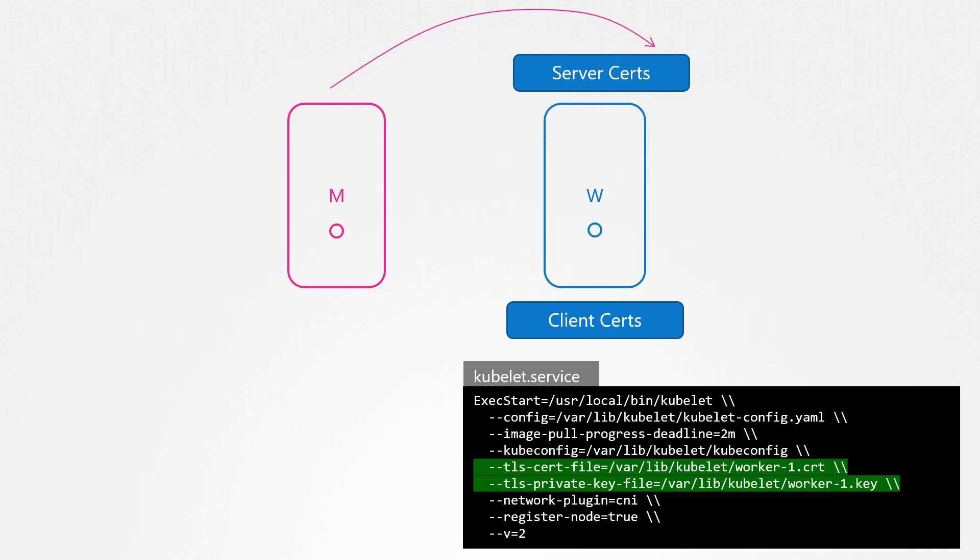In case of worker two, we don't have those generated, and we don't want to do that ourselves. We also configured the kubeconfig file, which has the client certificates used by the Kubelet to connect to the kube API server. Our goal with TLS bootstrapping is to automate the certificate management so that Kubelet can take care of it by itself.